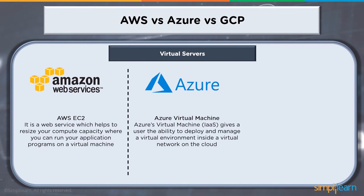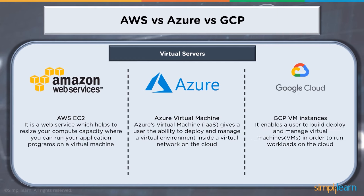When it comes to Azure, the Azure Virtual Machine is an infrastructure-as-a-service offering giving users the ability to deploy and manage a virtual environment inside a virtual network on the cloud, managed by the cloud provider. Google Cloud Platform's GCP VM instances enable users to build, deploy, and manage virtual machines to run different workloads on the cloud.